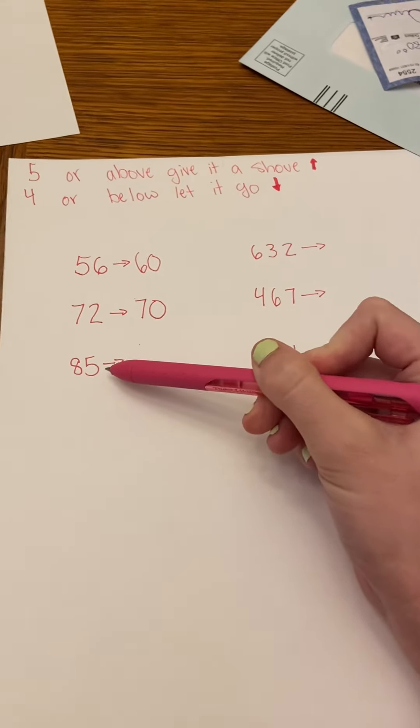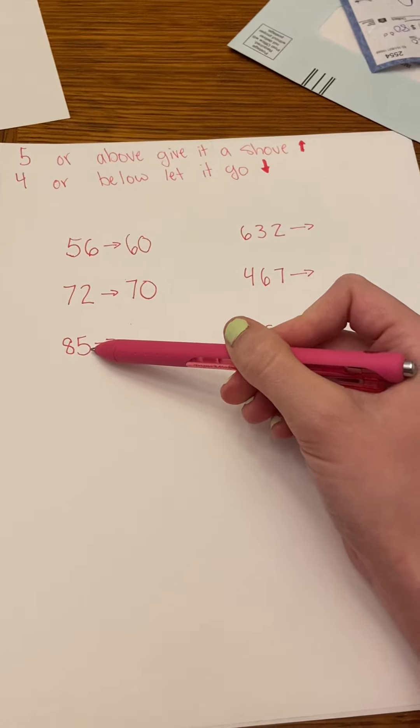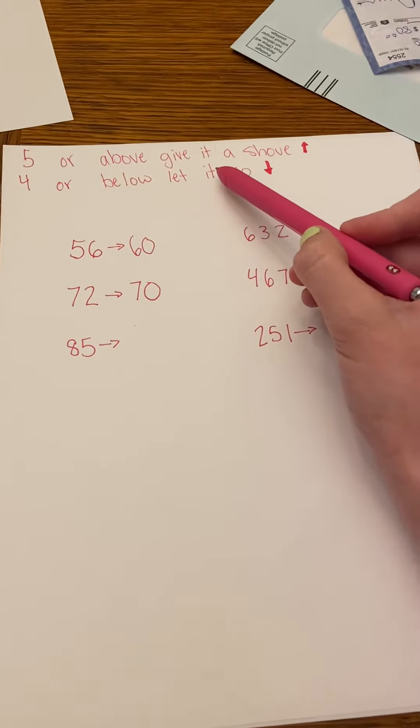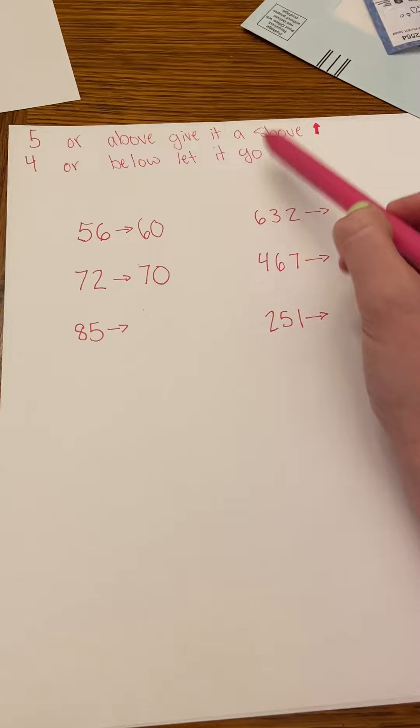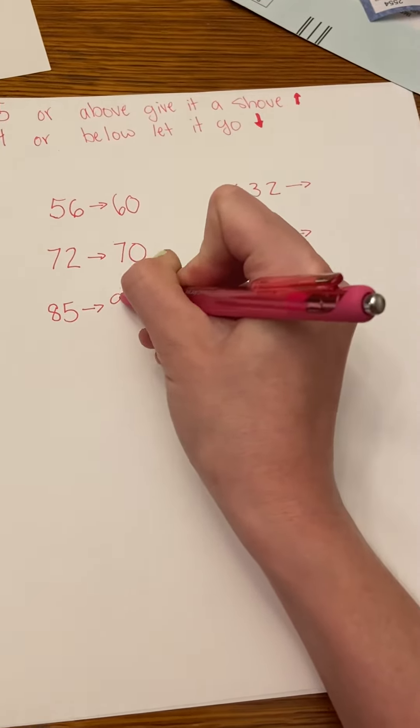And then 85, so this one's tricky because the five is right in the middle. But if I remember my little poem, five or above, give it a shove up. I'm gonna give it a shove up to the next ten, to 90.